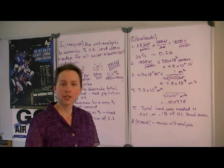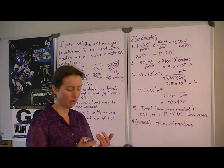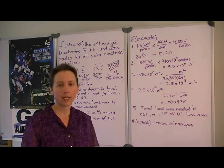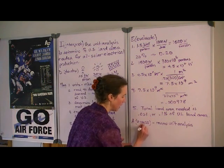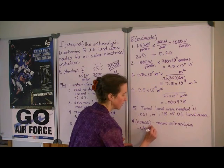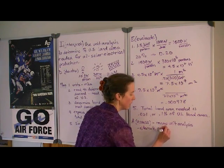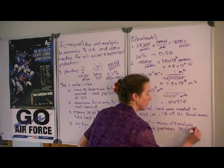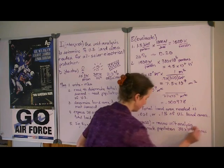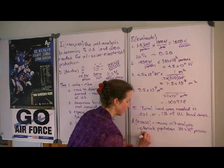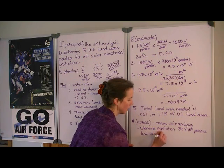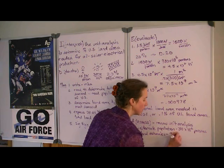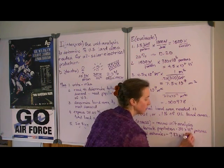Secondly, let's consider the values that we used for population and for the total land area. Now, different sources might give you slightly different numbers. For example, I also found population estimates of 310 million, and I found land estimates of 9.83 times 10 to the 12 meters squared.